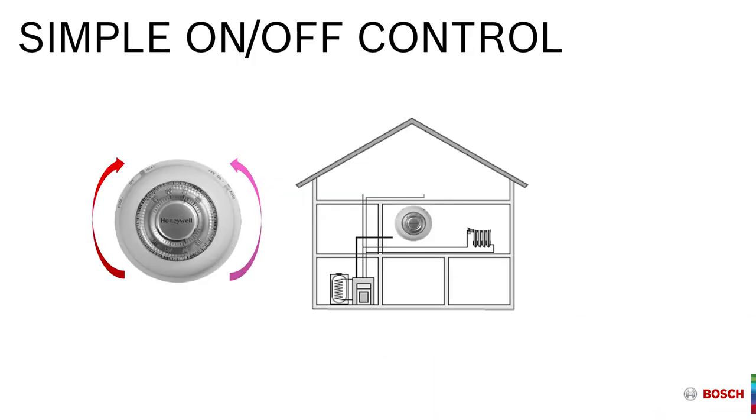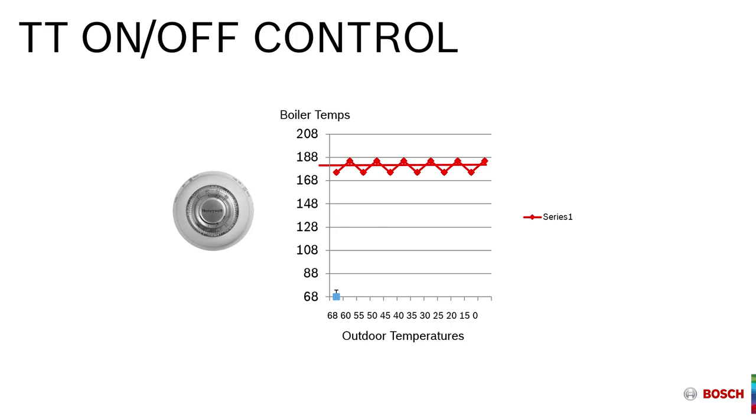The idea of using outdoor reset is to take away that simple on-off control that we typically classically see with a high mass boiler. The high mass boiler supplies a single temperature regardless of the outdoor temperature or regardless of the demand inside the home. It is nothing more than an on-off controller to the boiler. In doing that the boiler might hit limit and shut down. Regardless of the outdoor temperature it only supplies a stable single temperature inside of the home. This is not the optimal way or the highest efficiency way to supply BTUs back into the home.